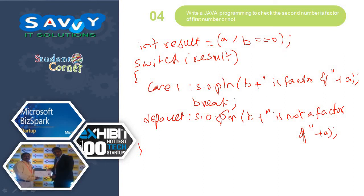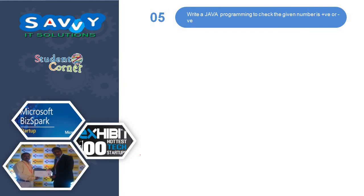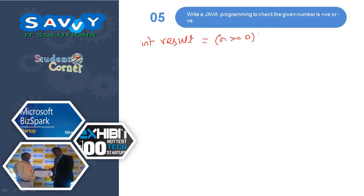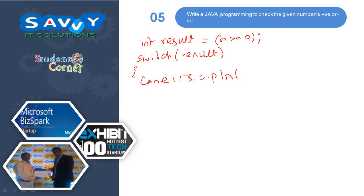From conditional operator — simply if, if-else, and in switch case — we are using the same programs in different ways, a different way of approach. int result is equal to n greater than equal to 0. Switch result: case 1 system.out.println — checking if n is a positive number.